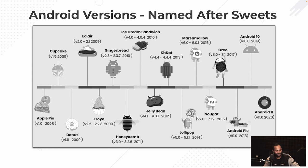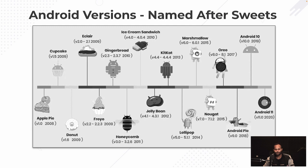A couple of things which I'm sure you guys will already be aware about. All the Android versions up till Android 9 were given names based on desserts. It started with Apple Pie, then there was Android Alpha, Beta came in after that, and then cupcake, donut - these are all sweets, desserts.